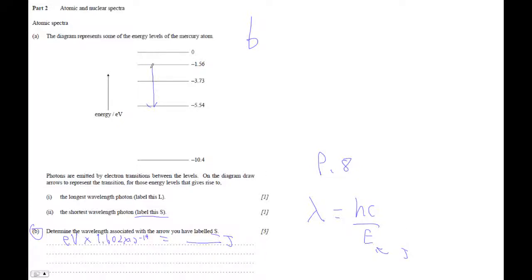But anyway, that's it. So take your transition that you've chosen that is S. Figure out the energy difference that it represents, convert it to joules, plug it into this formula.